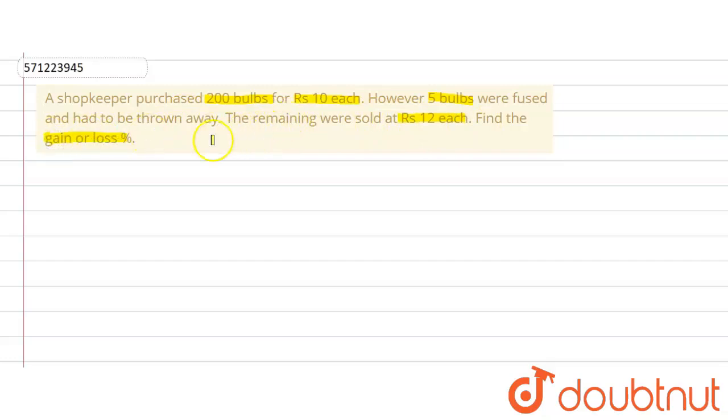So in this question, we are supposed to find out the gain or loss percent when some of the bulbs were fused and the remaining were sold at Rs.12.